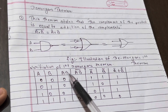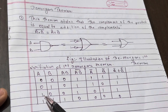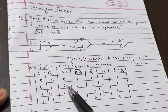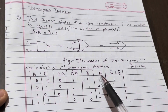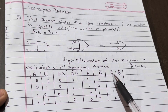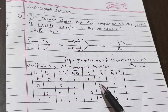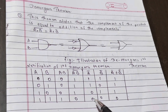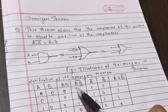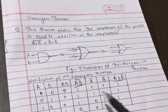So the NAND of A and B: when A=0, B=0, the result is 1. When A=1, B=0, the result is 1. When A=1, B=1, the result is 0.